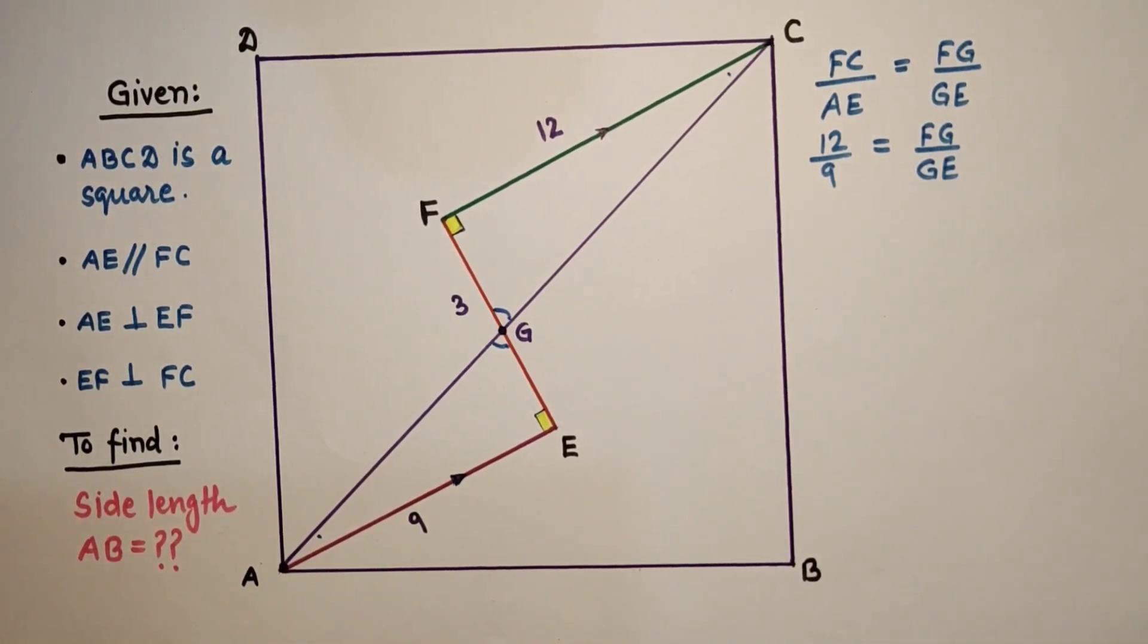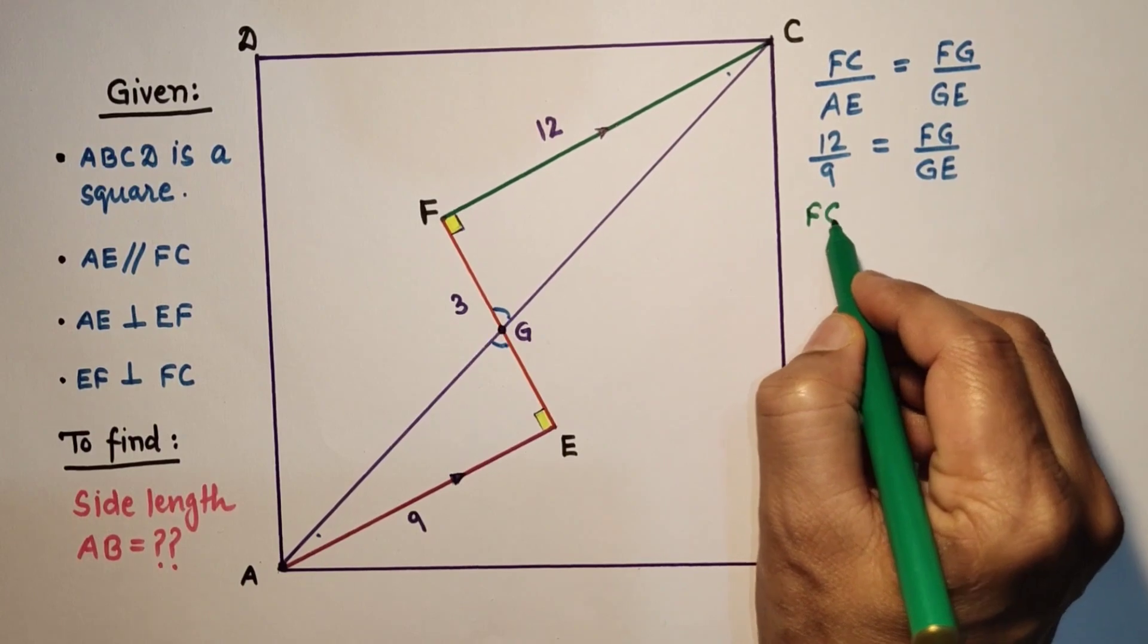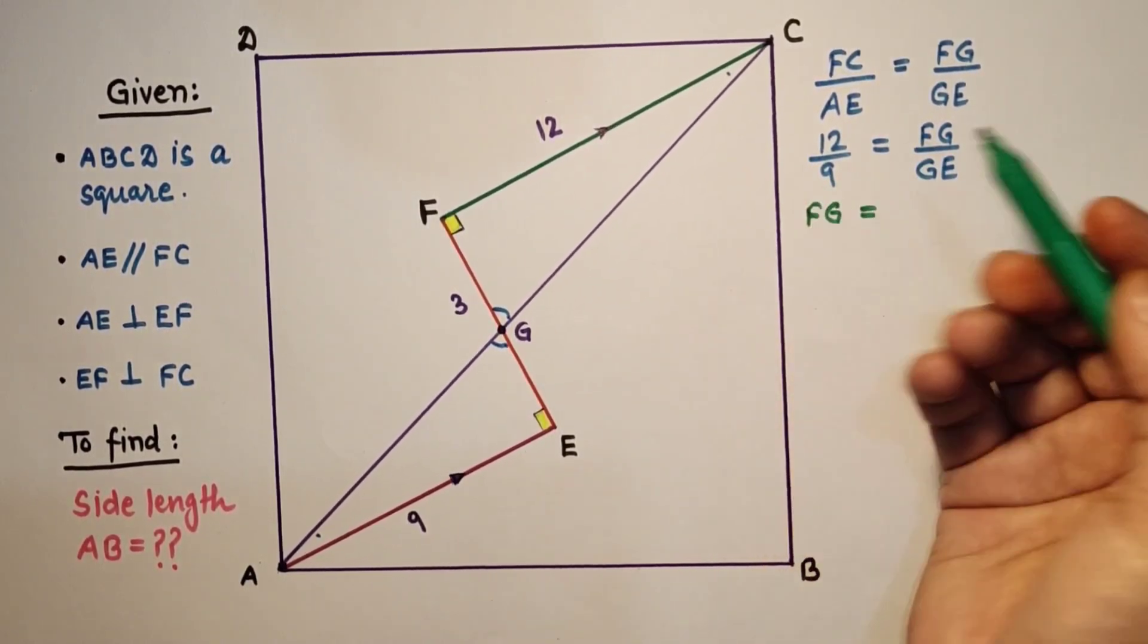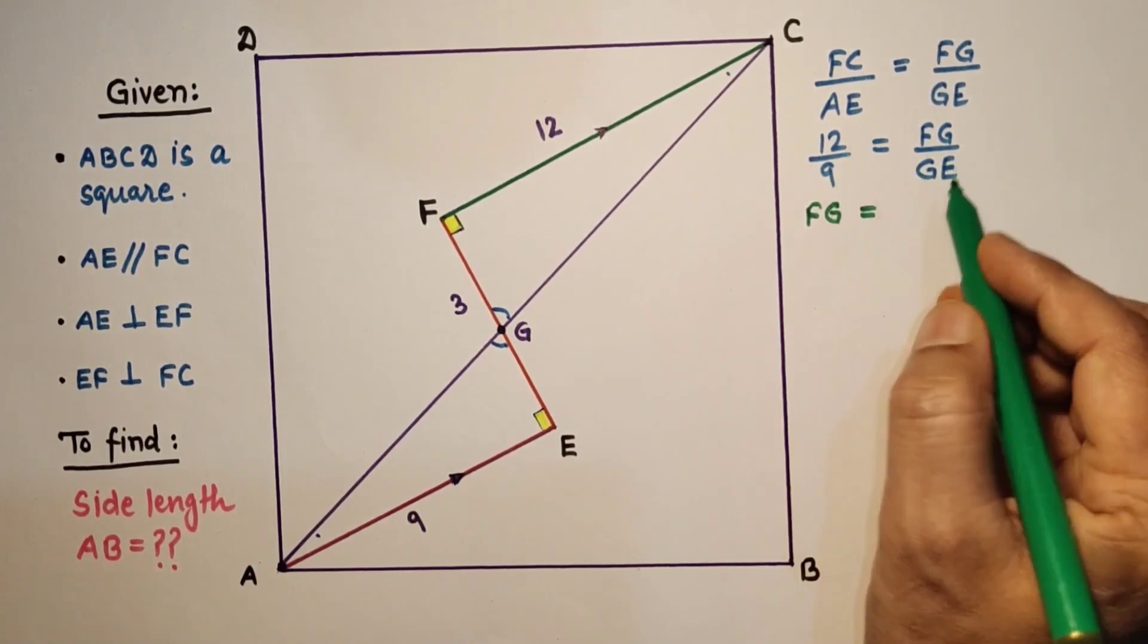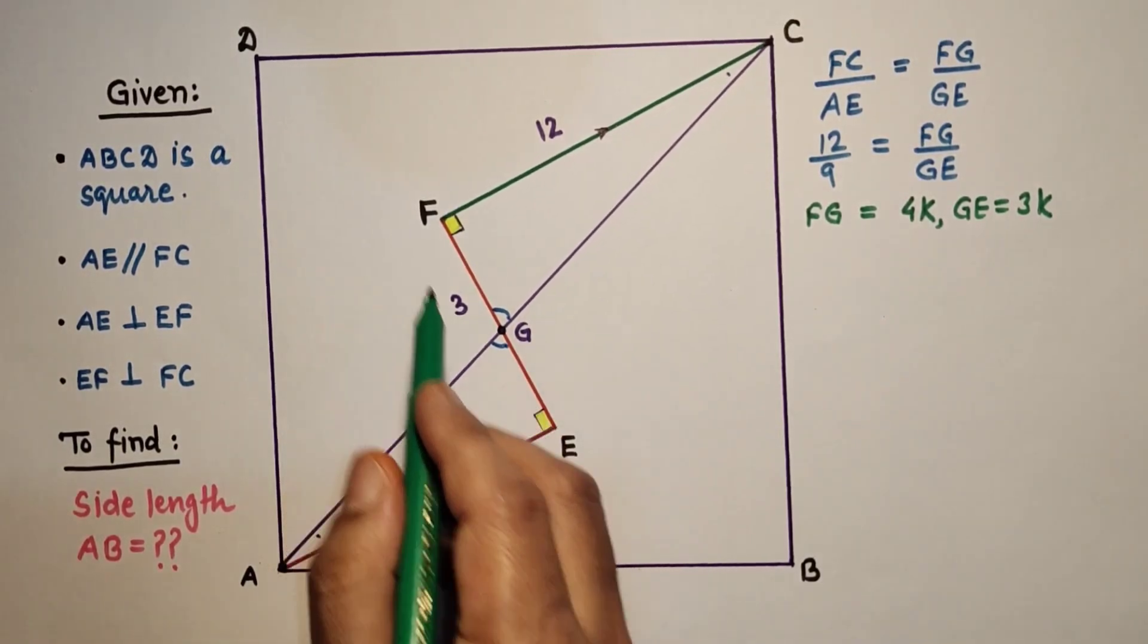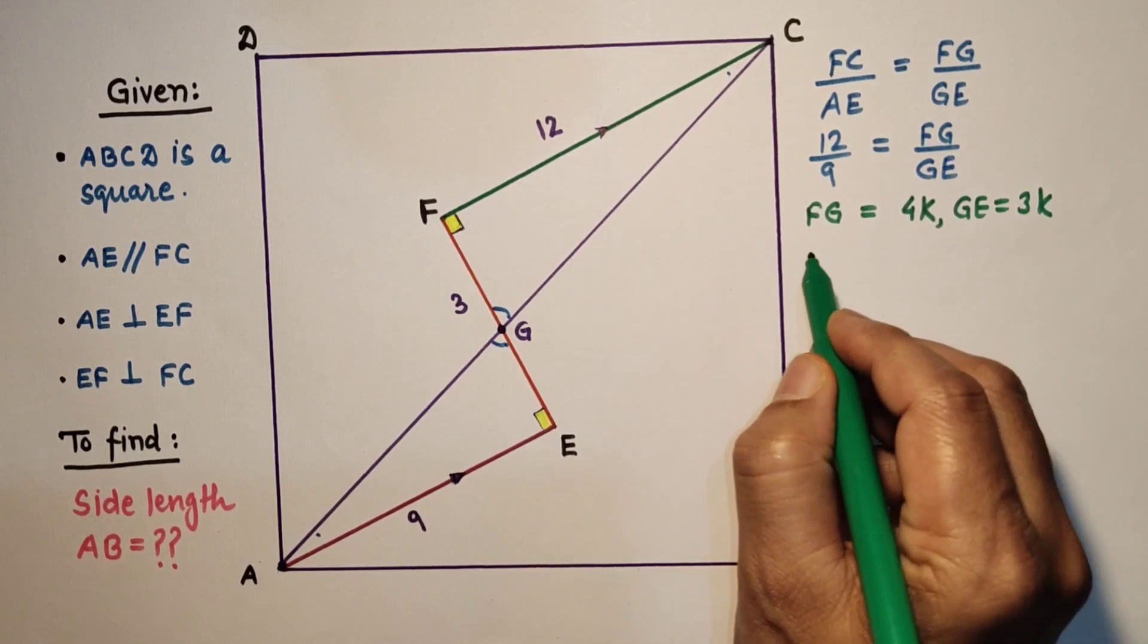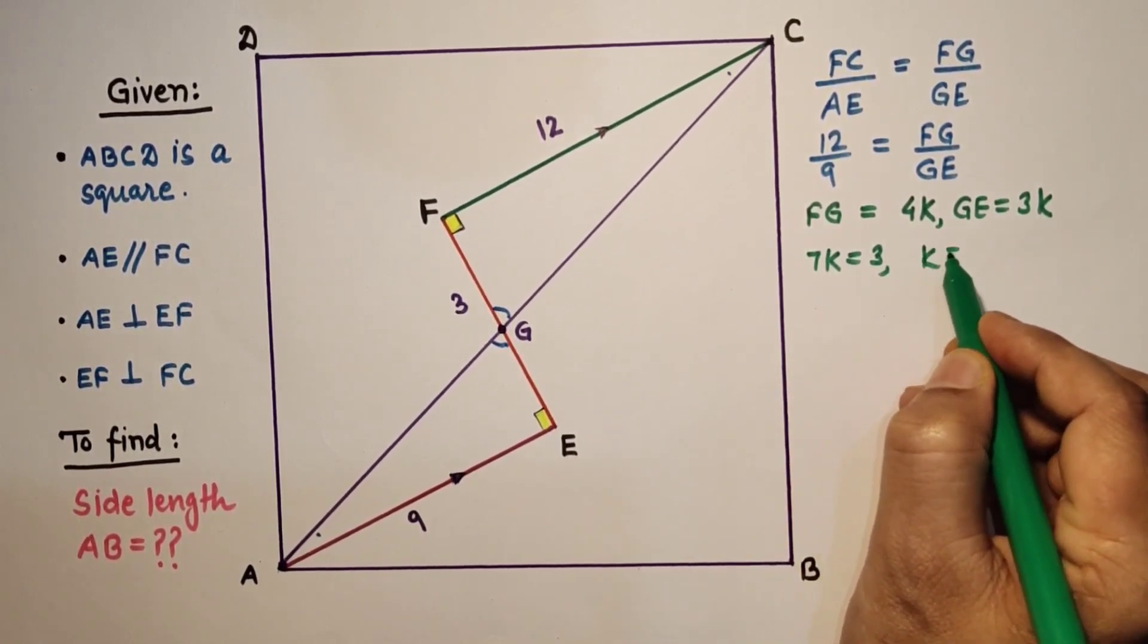So we can say that FG is equal to 12K. We can cancel by 3, so 4K and 3K. But FG plus GE, the full EF length is given as 3. So 4K plus 3K, 7K is equal to 3, and we found K as 3 by 7.